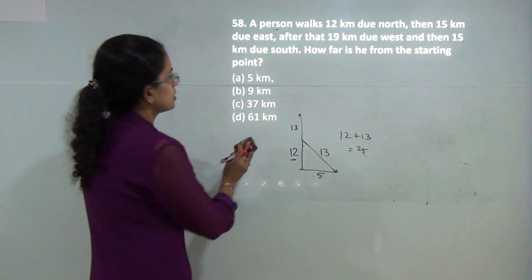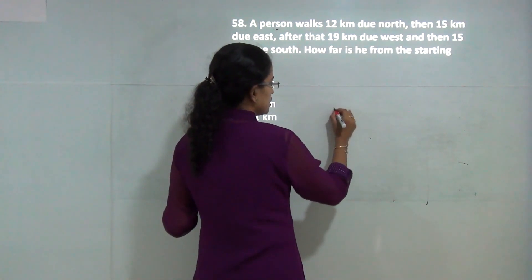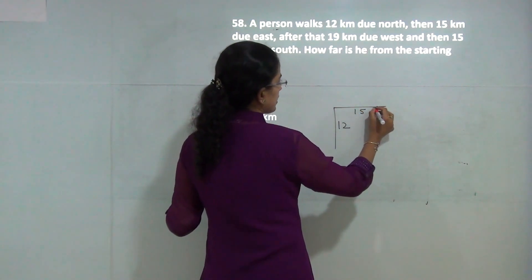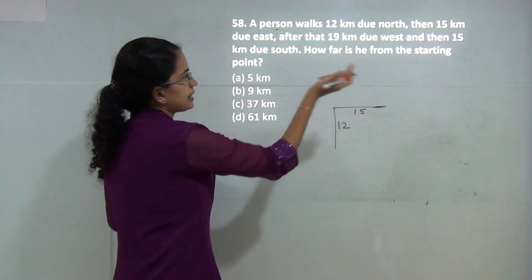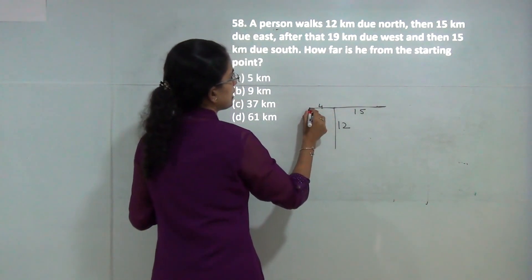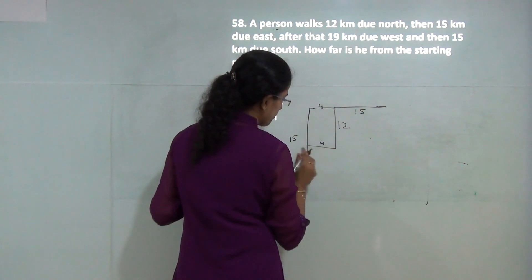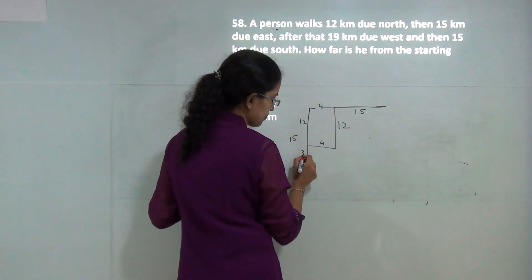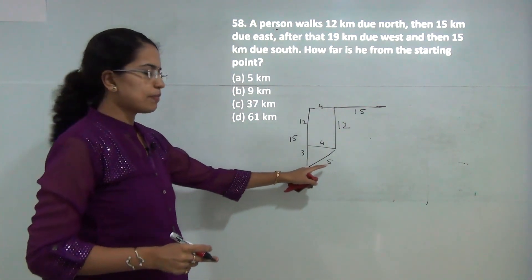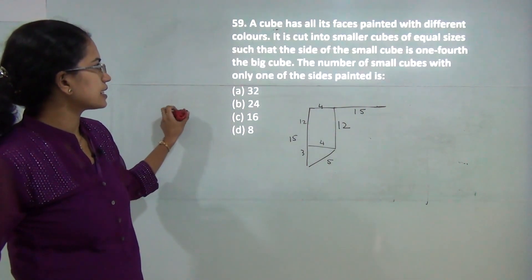Next question: a person walks 12 kilometers north, then 15 kilometers east, then 19 kilometers west which is 15 plus 4 more, then 15 kilometers south. This leaves 4 horizontal and 3 vertical. Applying Pythagoras: 4 squared plus 3 squared equals 5. So 5 is the correct answer.